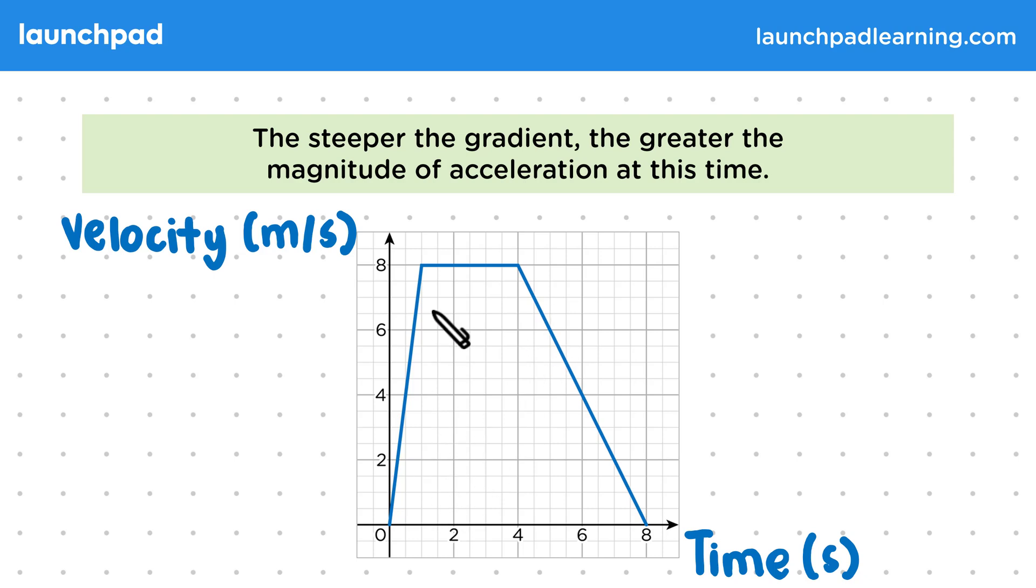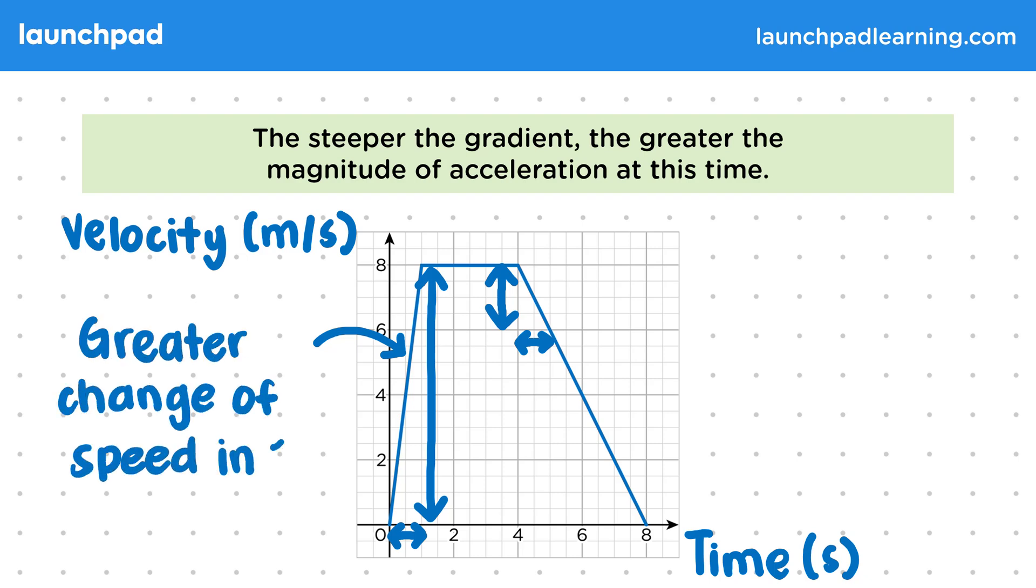Just from looking at the graph, we can tell that this first section has a stronger acceleration or deceleration than the last section. In the first section, it takes one second for the bird's velocity to change by eight metres per second. But then in the last section, after one second, the velocity is only changed by two metres per second. This means that during the first section, there is a greater change of speed in one second. In other words, there's a stronger acceleration here.